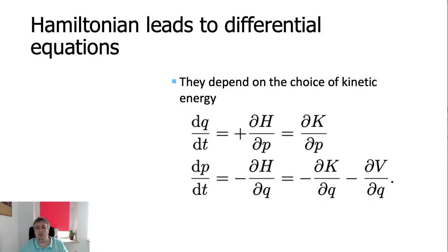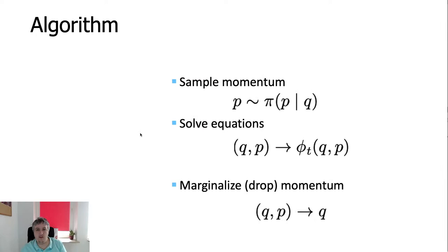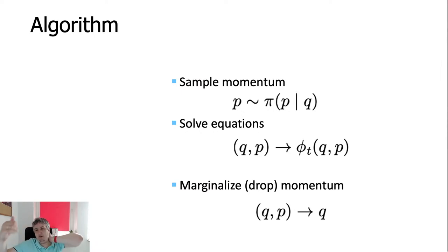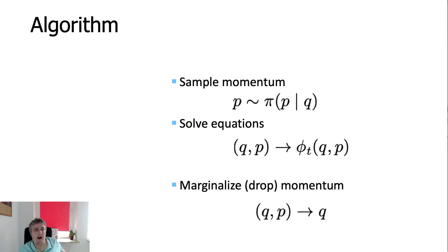Because of the decomposition, the equations become much simpler. The equation for position depends only on the derivative of kinetic energy with respect to momentum. The equation for momentum depends on the derivative of kinetic energy with respect to positions and on the potential energy — the logarithm of the probability distribution with respect to Q. The part from potential energy does not appear in the position equation since potential energy does not depend on momentum.